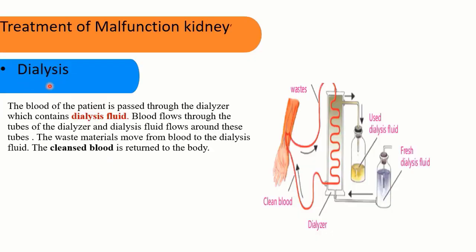Now we discuss the working of dialysis. The blood of the patient is passed through the dialyzer which contains dialysis fluid. Blood flows through the tubes of the dialyzer and the dialysis fluid flows around these tubes. The waste materials move from blood to the dialysis fluid, and the cleaned blood is returned to the body.